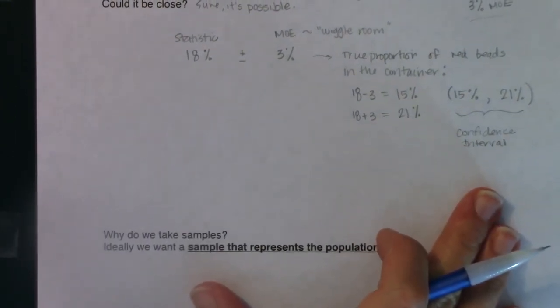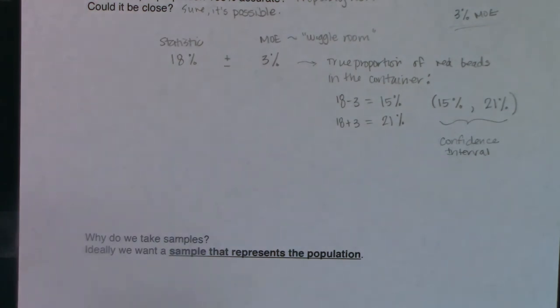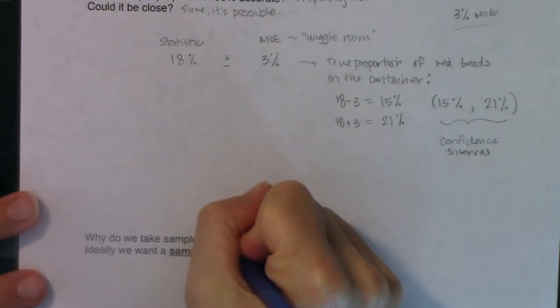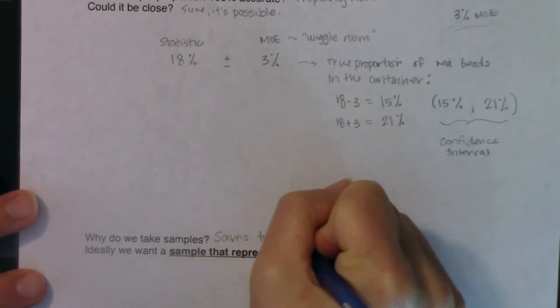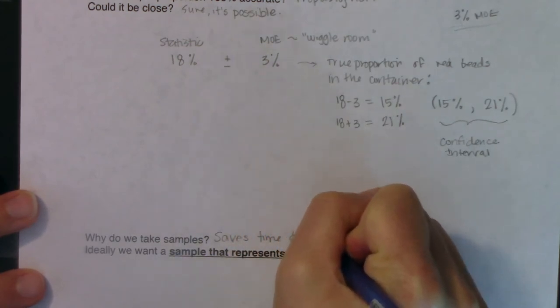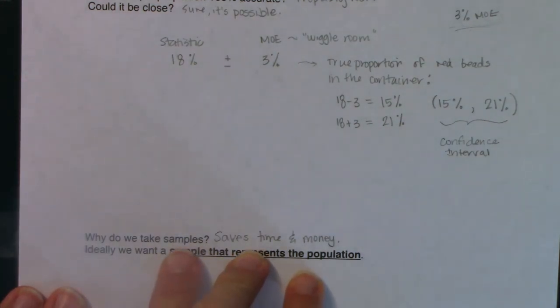All right. So let's finish up this page. So why do we take samples? We take samples because it's less money to go after a sample than a population and it's less time. So it saves time and money. And sometimes it's inappropriate to run a census.